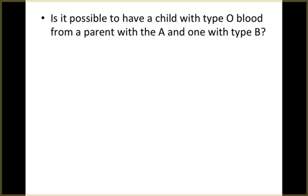Let's do a couple more practice problems to get a better understanding of this. Is it possible to have a child with type O blood from a parent with type A and one with type B?